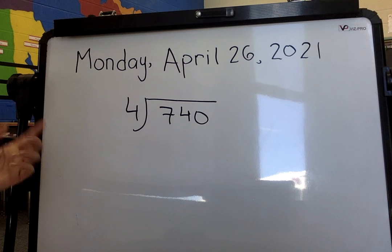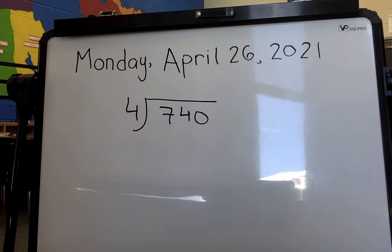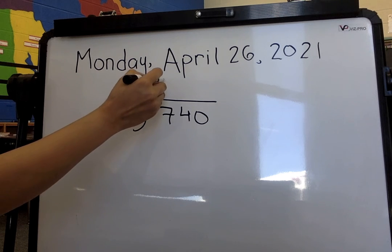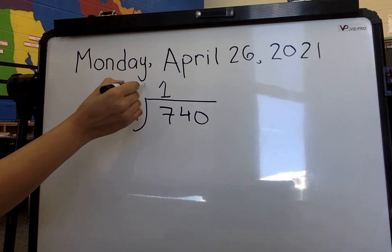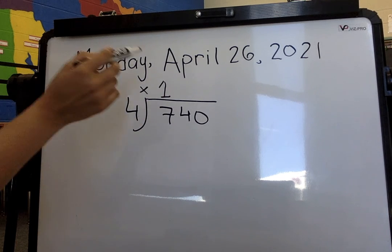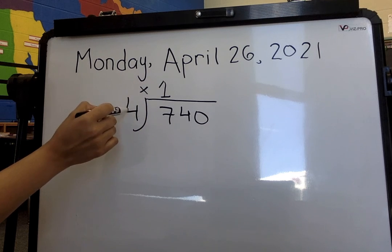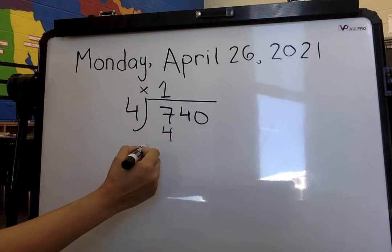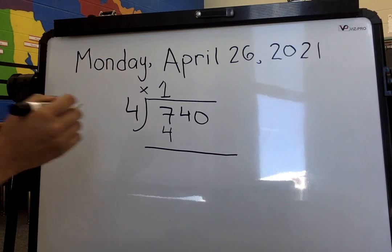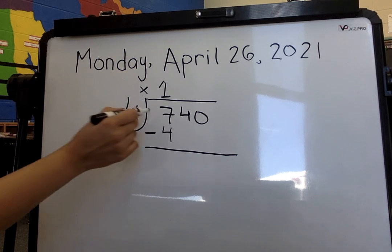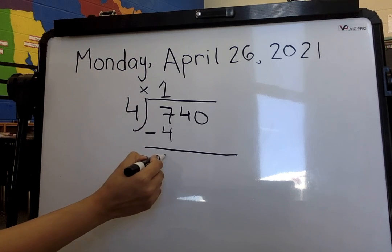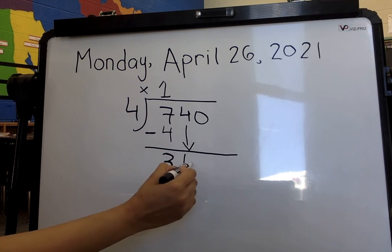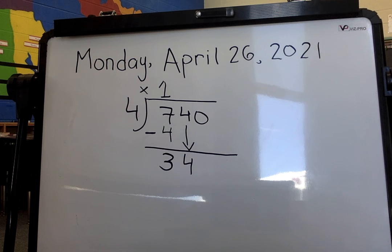Now we need to ask ourselves, how many 4s can fit into 7? And we know that only one 4 can fit into 7. So we go ahead, we write our 1 at the top. Then we need to remember that we need to multiply as well. So we go back, we multiply 1 times 4 or 4 times 1. We look at our sheet and it is 4. So then we go ahead, we subtract and 7 take away 4 gives us 3. Now we can bring this number down. So we have 34.